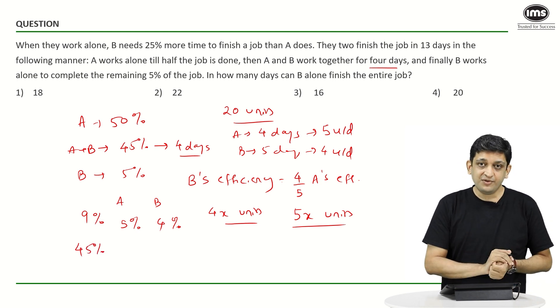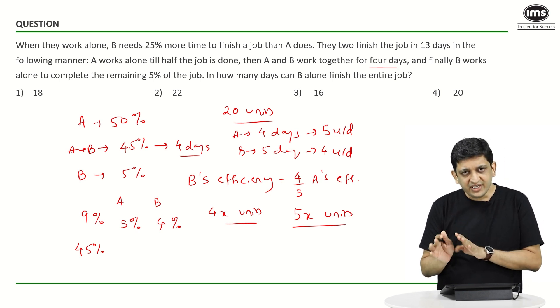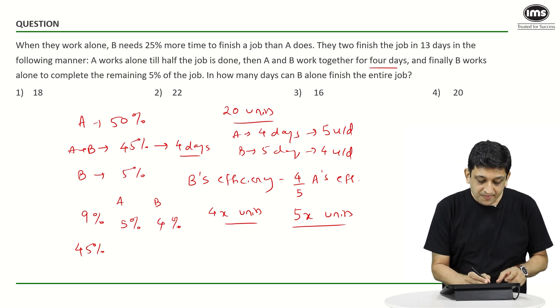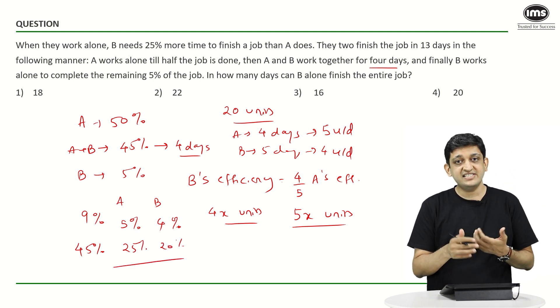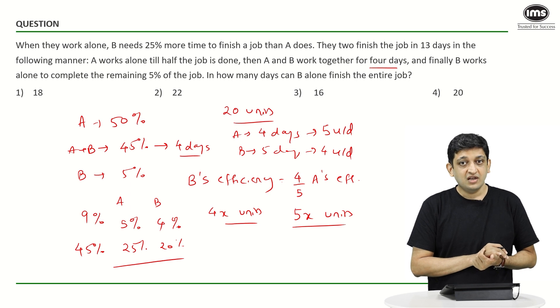Out of these 45 percent, A would have done 5 ninth of the work as we discussed earlier. So A would have done 25 percent, B would have done 20 percent, because they are doing work in the same proportion.